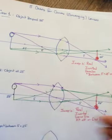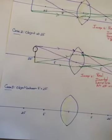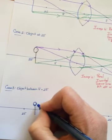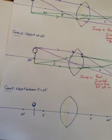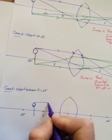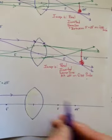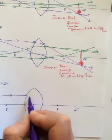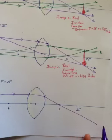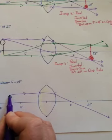That's case two. Case three — just like with mirrors — we're going to move the object in between f and 2f, so we put our object there. Again with the same color from the top, a ray going in parallel to the principal axis gets bent in such a way that it goes out through f on the other side of the lens.